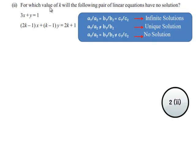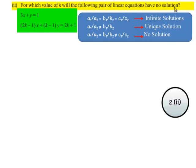For which value of k will the following pair of linear equations have no solution? The first equation is 3x + y = 1, and the second equation is (2k - 1)x + (k - 1)y = 2k + 1.